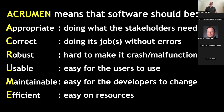Now, I've said there are six aspects, and there are six listed up there. But ACRUMEN has seven letters. So what does the N stand for? Nothing. I just tacked it on to make a real word, even if an obsolete one.